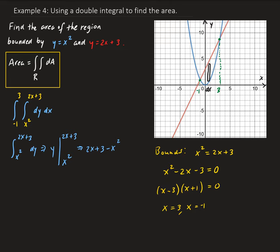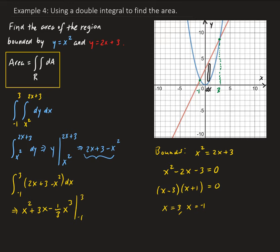Now we integrate 2x plus 3 minus x squared with respect to x, evaluated from negative 1 to 3. Integrating term by term: 2x integrates to x squared, 3 integrates to 3x, and negative x squared integrates to negative one-third x cubed. So we have x squared plus 3x minus one-third x cubed, evaluated from negative 1 to 3.